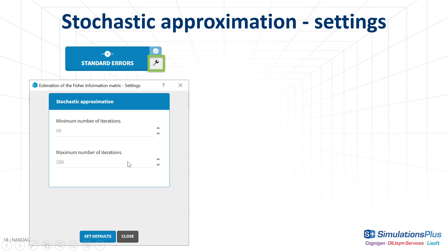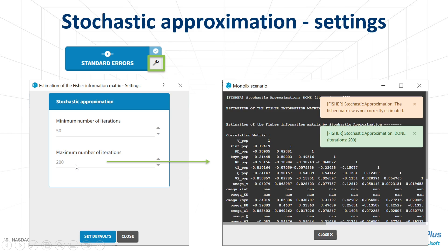A maximum number of iterations is defined in the settings of the task. By default, the stochastic approximation stops at most at 200 iterations, even if the matrix could not be inverted. In that case, Monolix gives a warning in the scenario report. There is also a minimum number of iterations, which, as already mentioned, is 50.